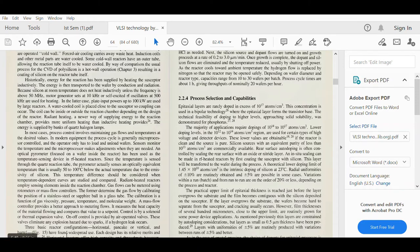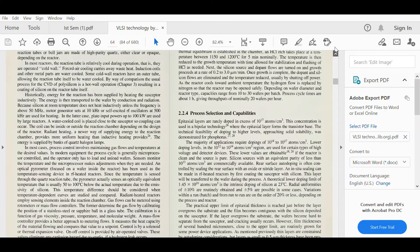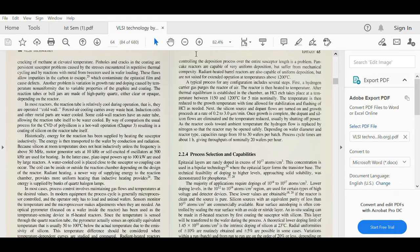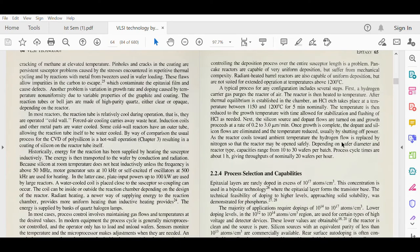Three basic reactor configurations—horizontal, pancake, and barrel—have found widespread use. Each design has its relative merits and disadvantages. Horizontal reactors offer high capacity and throughput, but controlling the deposition process over the entire susceptor length is a problem.